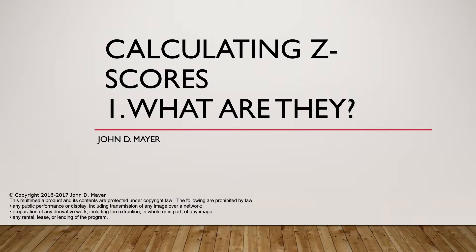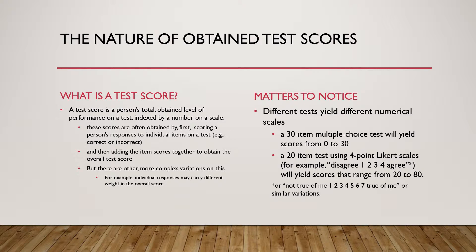To understand about tests, it helps to start with test scores and z-scores and ask what they are. Starting with the nature of obtained test scores: this is the score that you get when you take a test. A test score is your total score, usually indicative of some level of performance on a test, and it's indexed by a number on a scale.